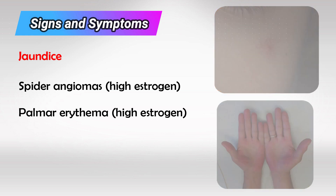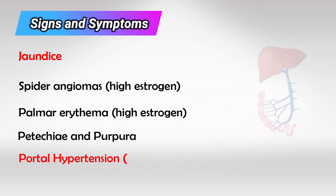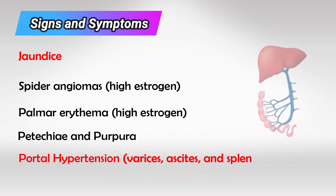The liver makes the clotting factors, so without these factors the patient will have petechia and purpura all over the body. The venous blood reaching the liver will also stagnate and build up backwards, and this will cause portal hypertension.